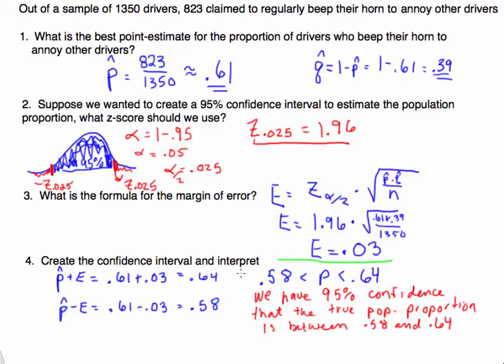So how would we interpret this? This is a very important part. The best way to explain this interval would be to say, we have 95% confidence that the true population proportion is contained or is in between 0.58 and 0.64. Notice I didn't say there's a 95% chance that it's in there, or there's a probability of 0.95 that it's between these two numbers.